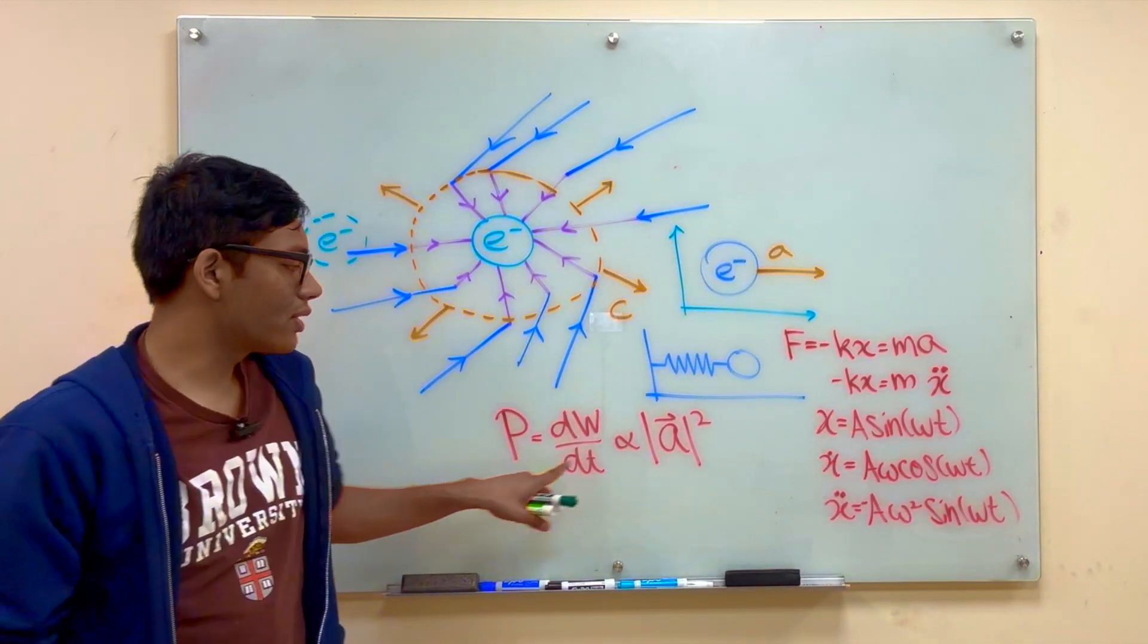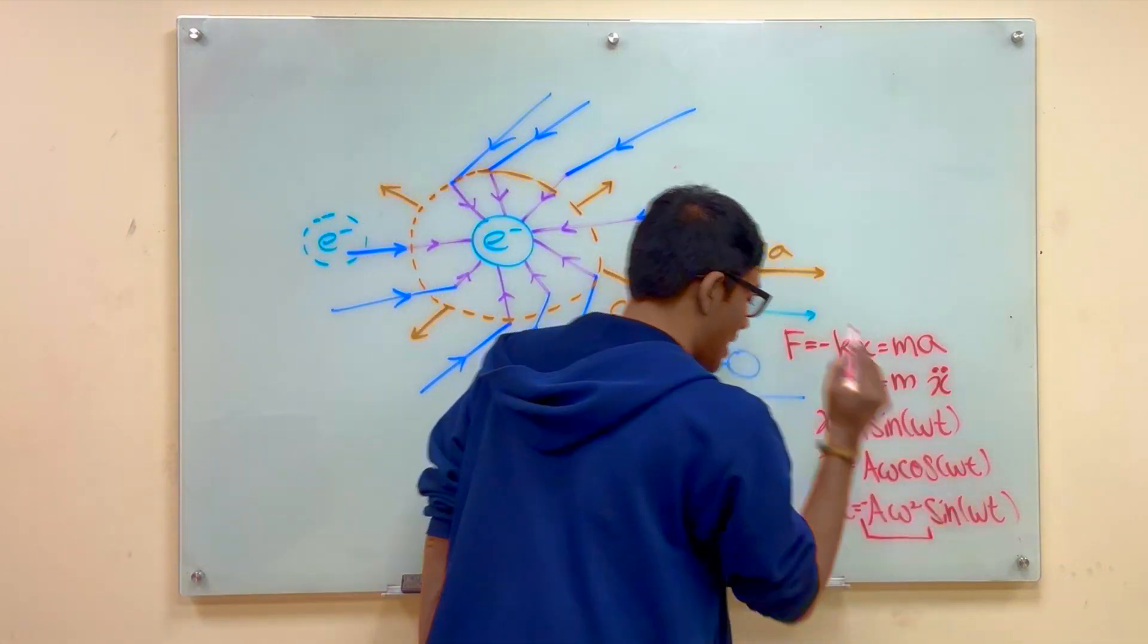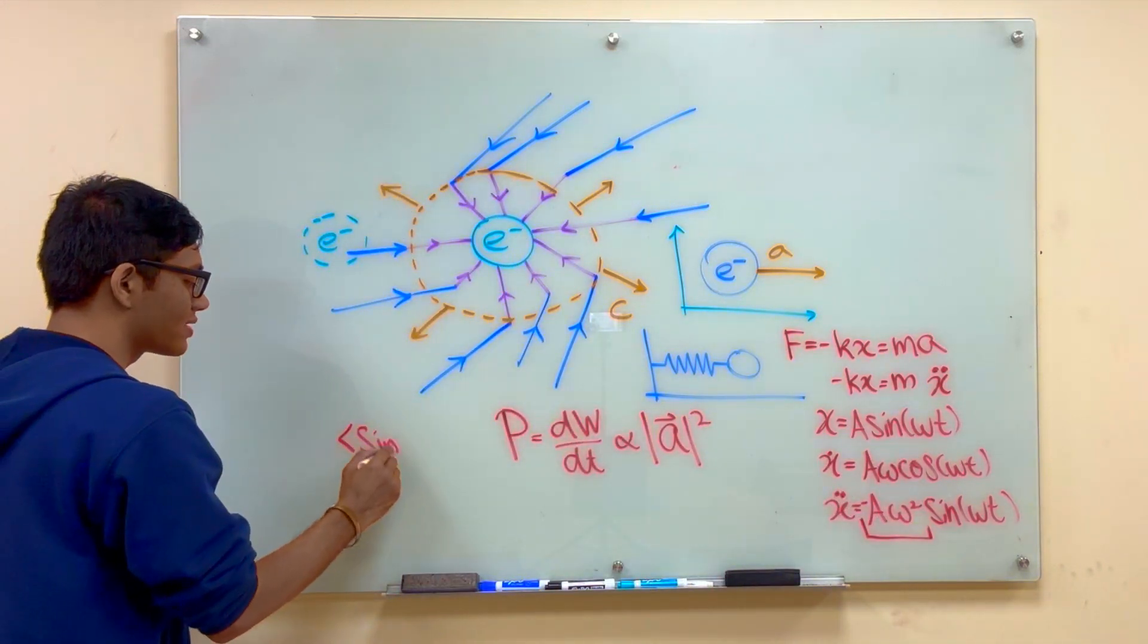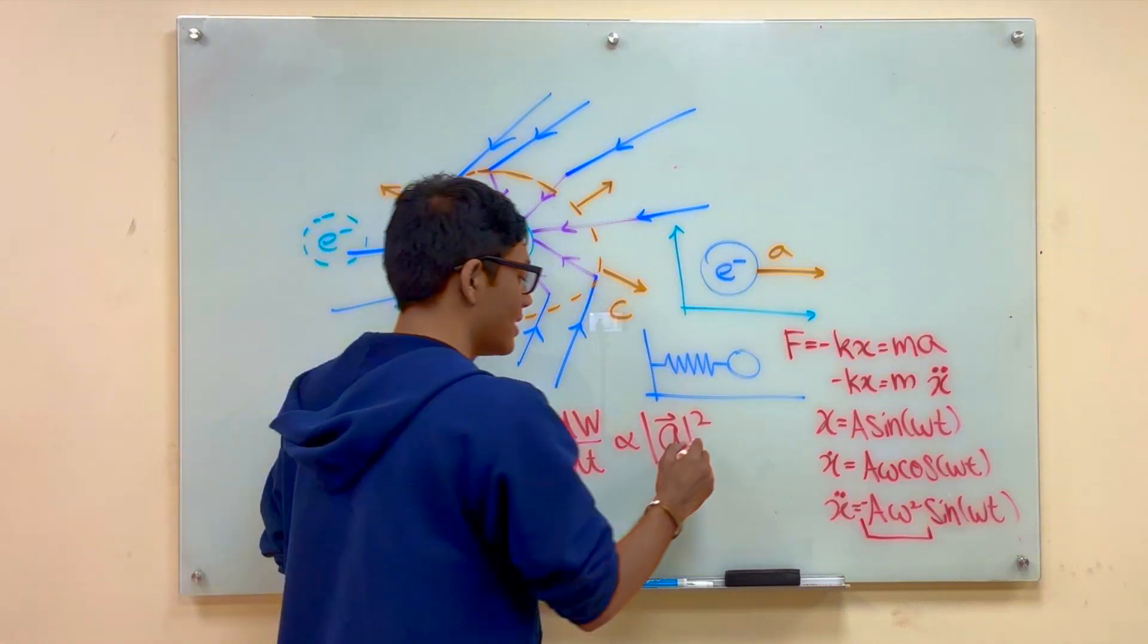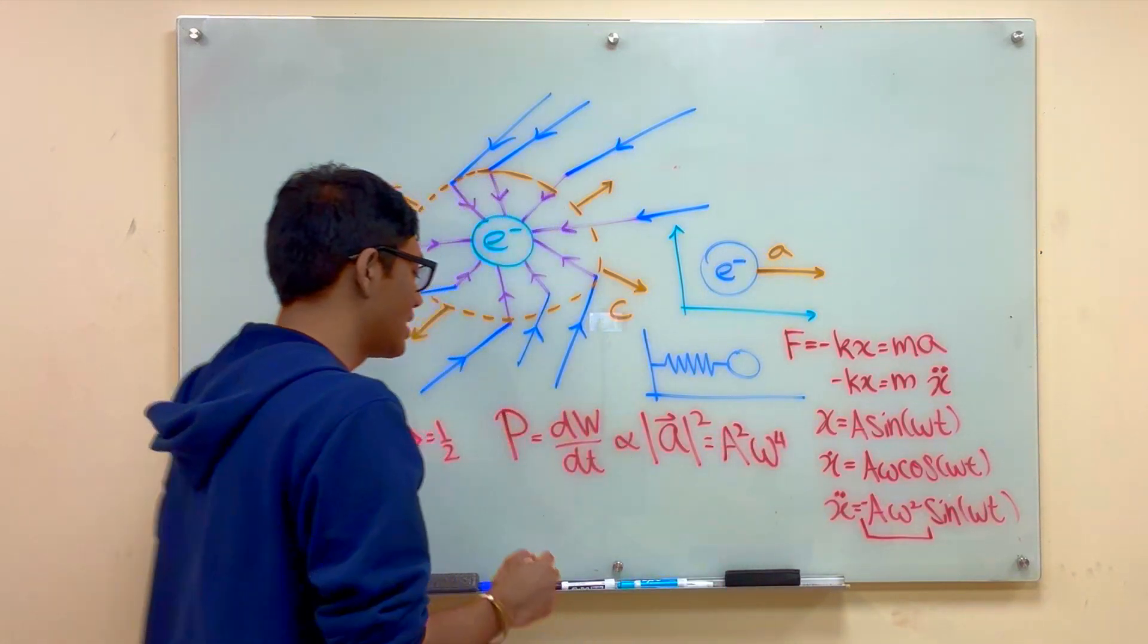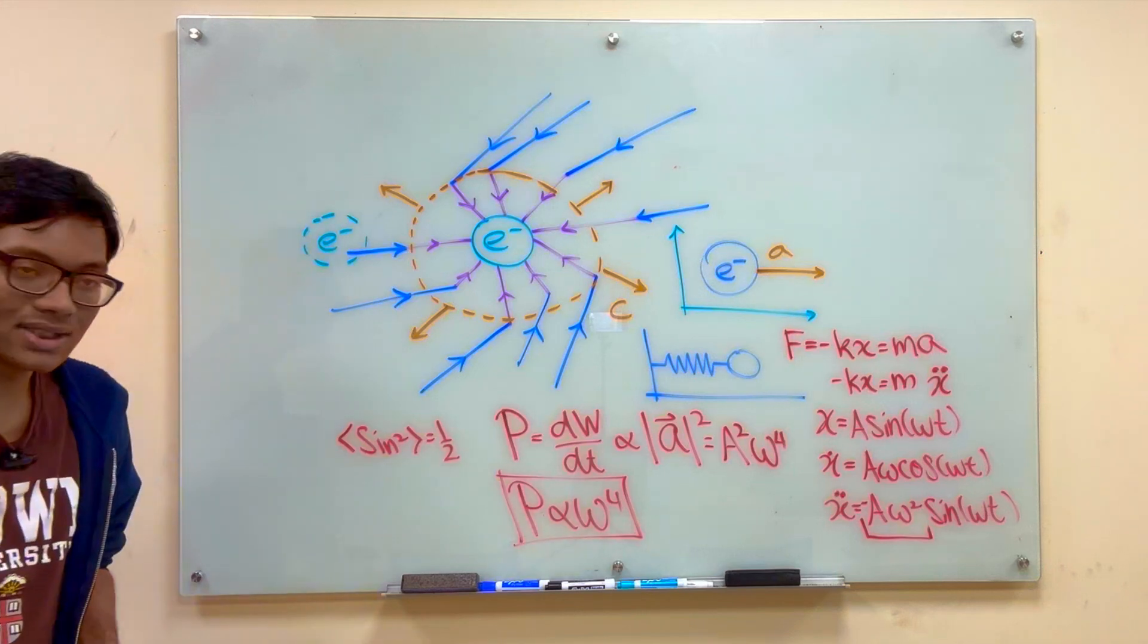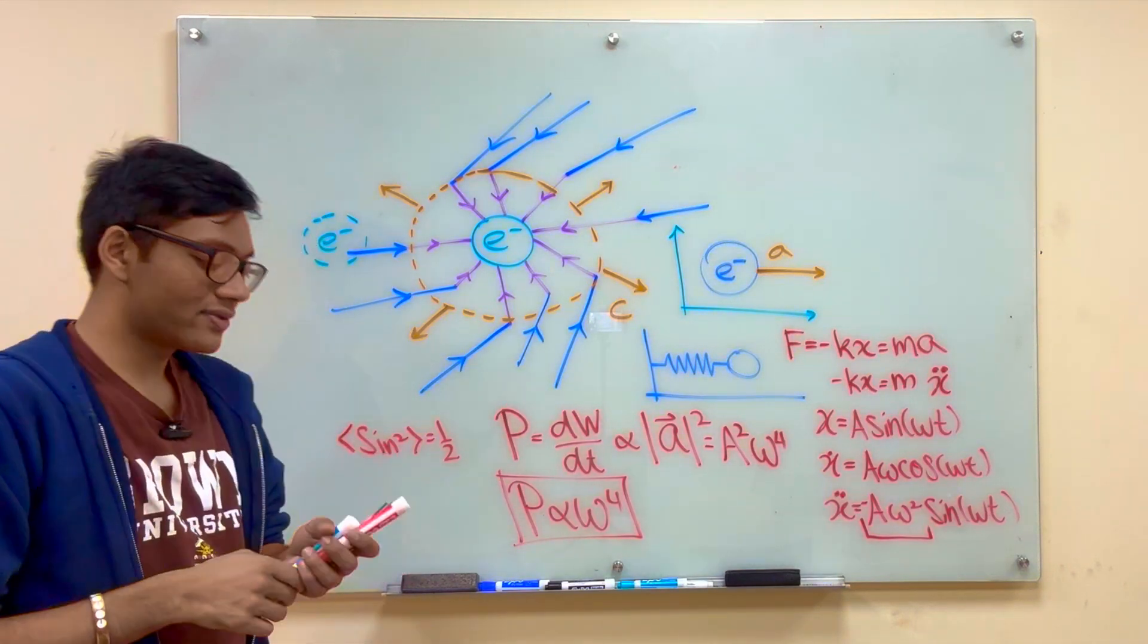Now, the power is proportional to the acceleration squared. In particular, the amplitude of the acceleration squared. The sine squared, if we average the sine squared part, that will just give us a factor of a half. So if I square the amplitude here, this gives me A squared times omega to the fourth. That means the power released by an accelerating charge is proportional to the fourth power of the angular frequency. What does that mean? That means the sky is blue. And here's the reason why.